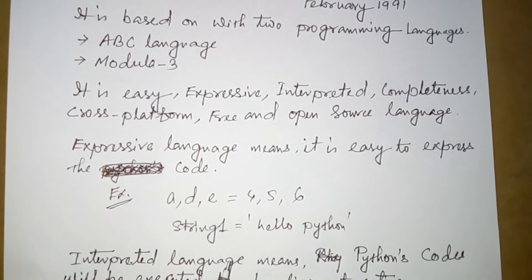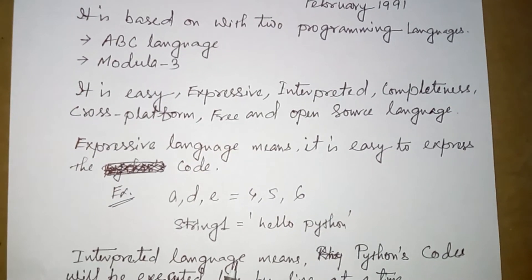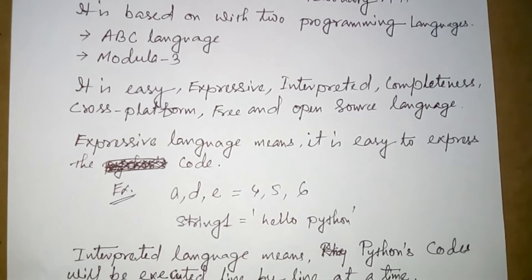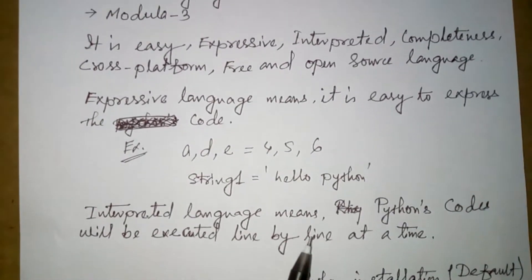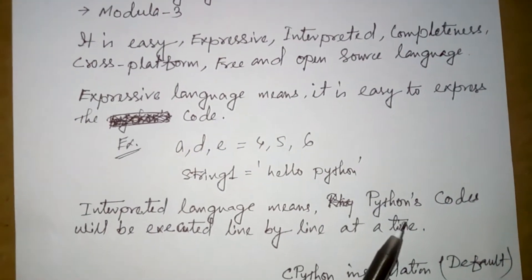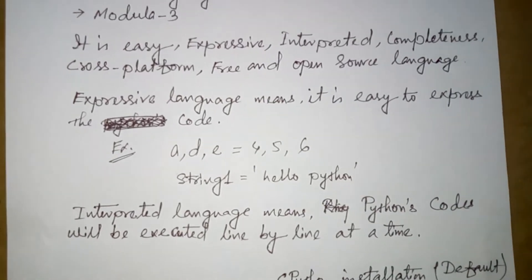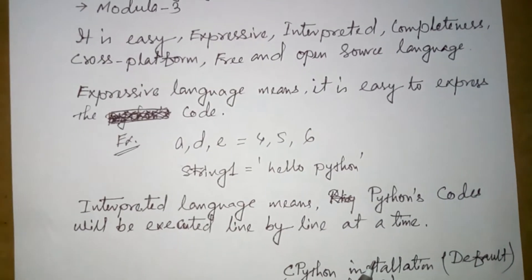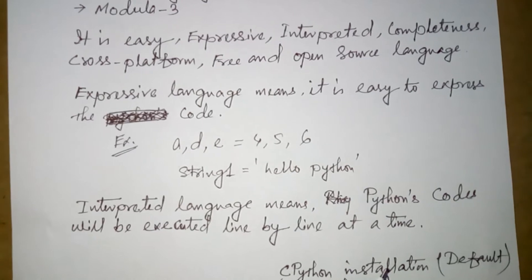This is an expressive language — it helps you write clearly. The interpreter means that Python executes code line by line, going through each line one at a time.